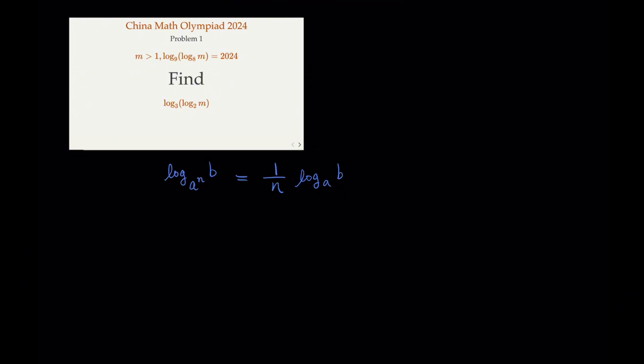Let's look at the original problem. From the given equation, what we can do is, we say, 9 raised to 2024 is going to equal log base 8 of m. Why? Because this is by definition of the logarithm. When I use this formula here, because 8 is 2 to the third power, so this will be 1 third of log base 2 of m.